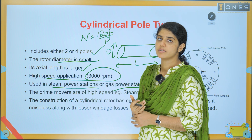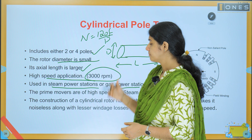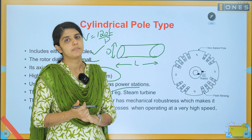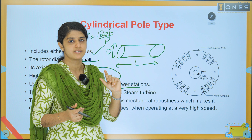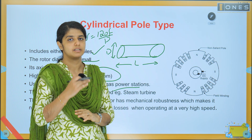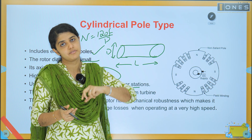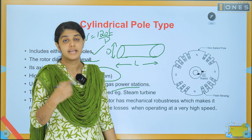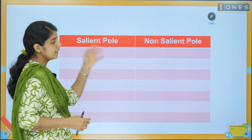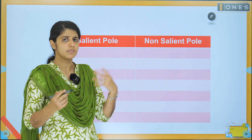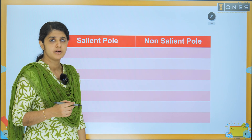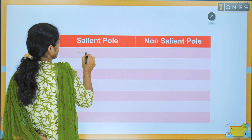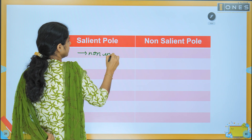These prime movers are usually steam turbines used in steam power stations and gas power stations, because these are high-speed turbines. The cylindrical machine has a larger axial length relative to diameter, so horizontal alignment is used. This avoids centrifugal force issues and shaft stress.